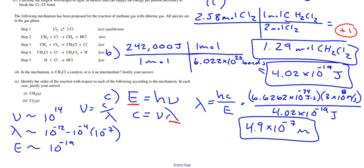Frequency is a big positive number because it's how often a wave hits in a second - it's going to be very, very frequent. Everything else is a tiny number. One point is earned for the correct setup using consistent equations from part B. So either you go step by step finding the frequency and then finding the wavelength, or you use the combined equation. Apparently, even if you do it wrong but you're using the right equations, you get a point. One point is also earned for the correct answer.